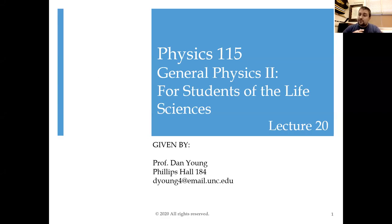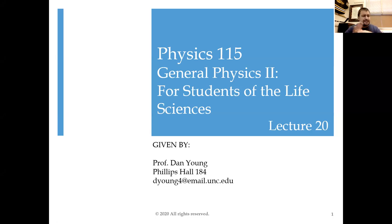Hello everybody. Welcome to our second lecture on the nature of geometrical optics, optical systems, and all of that good stuff. What we're going to talk about today is, first of all, a review of what we talked about in the previous lecture - the idea of when light is interacting with a surface, it does two things: it can either reflect off that surface, or it can refract through that surface.